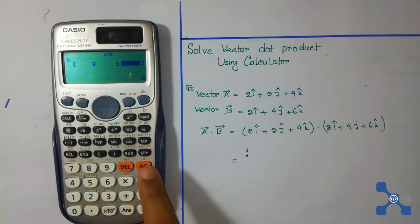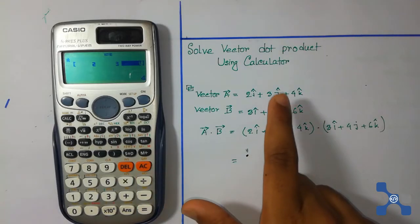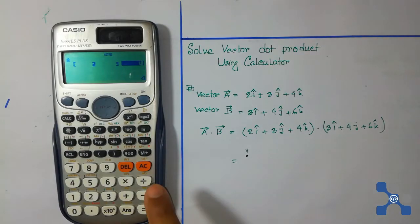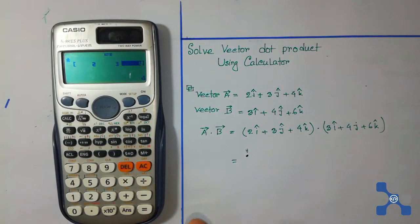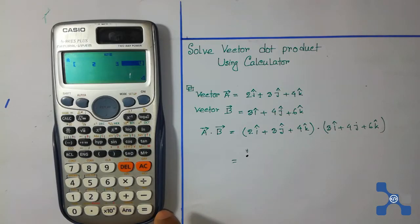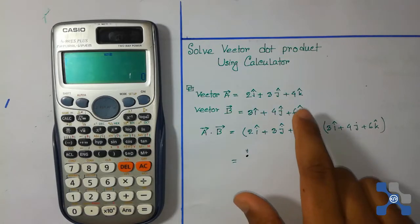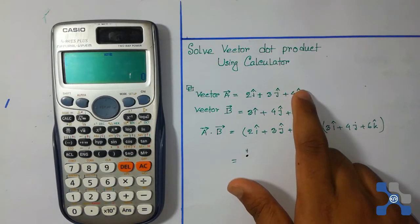Then press the AC button to completely load this vector onto the calculator. Be careful: after pressing the equal button, you should press the AC button. Vector A is now already loaded.